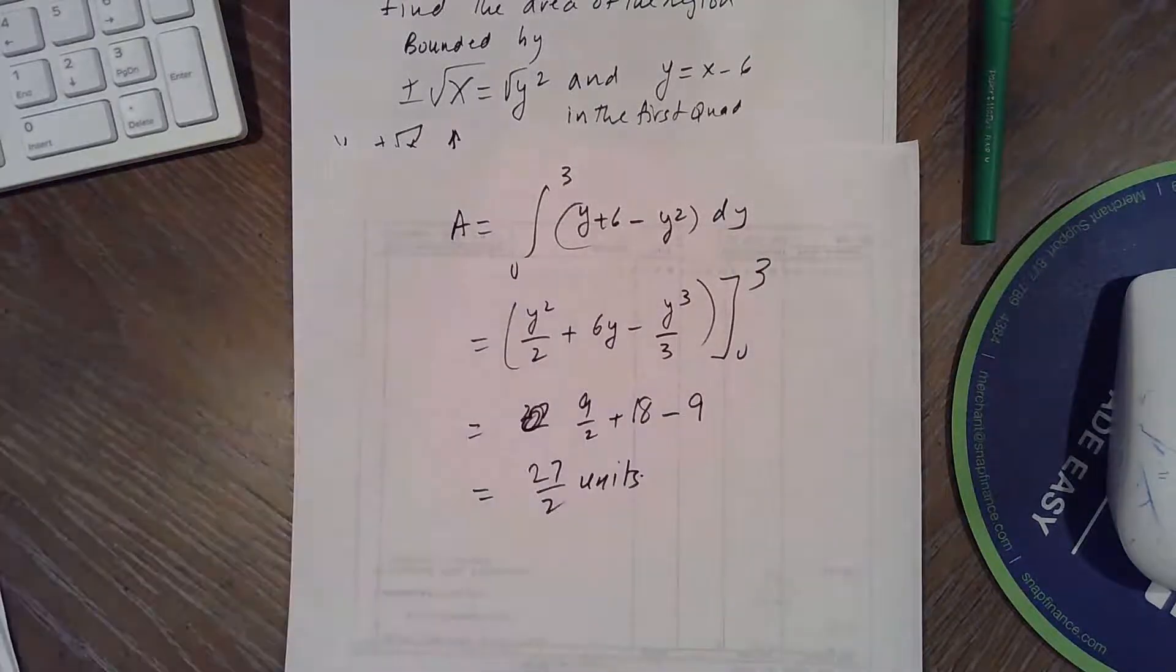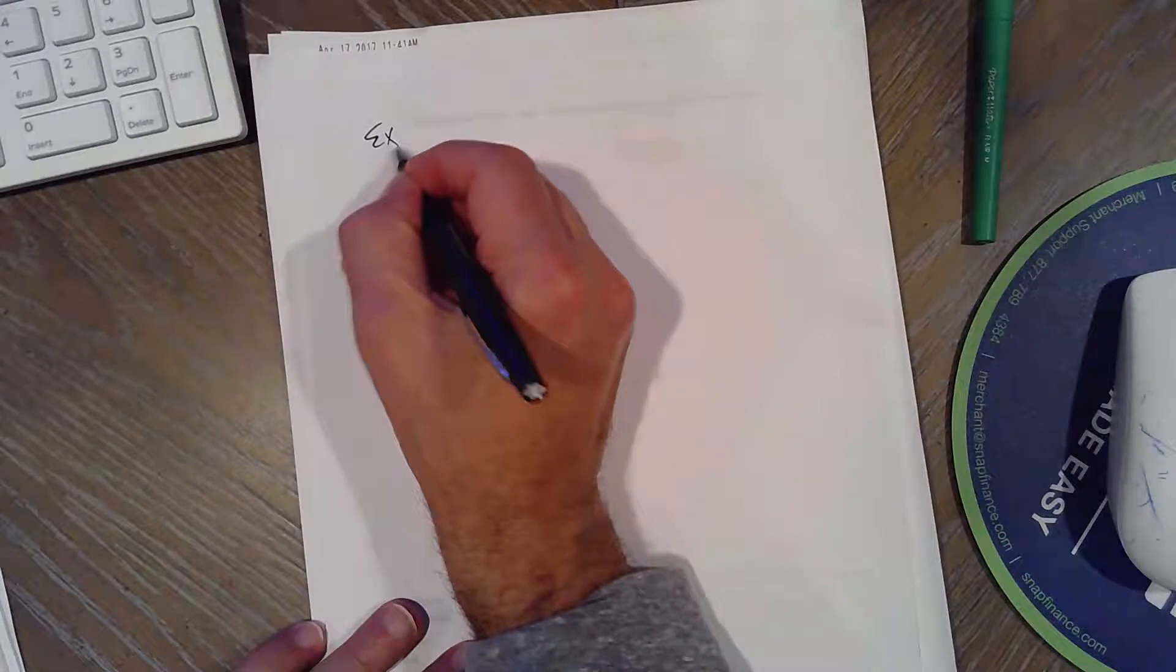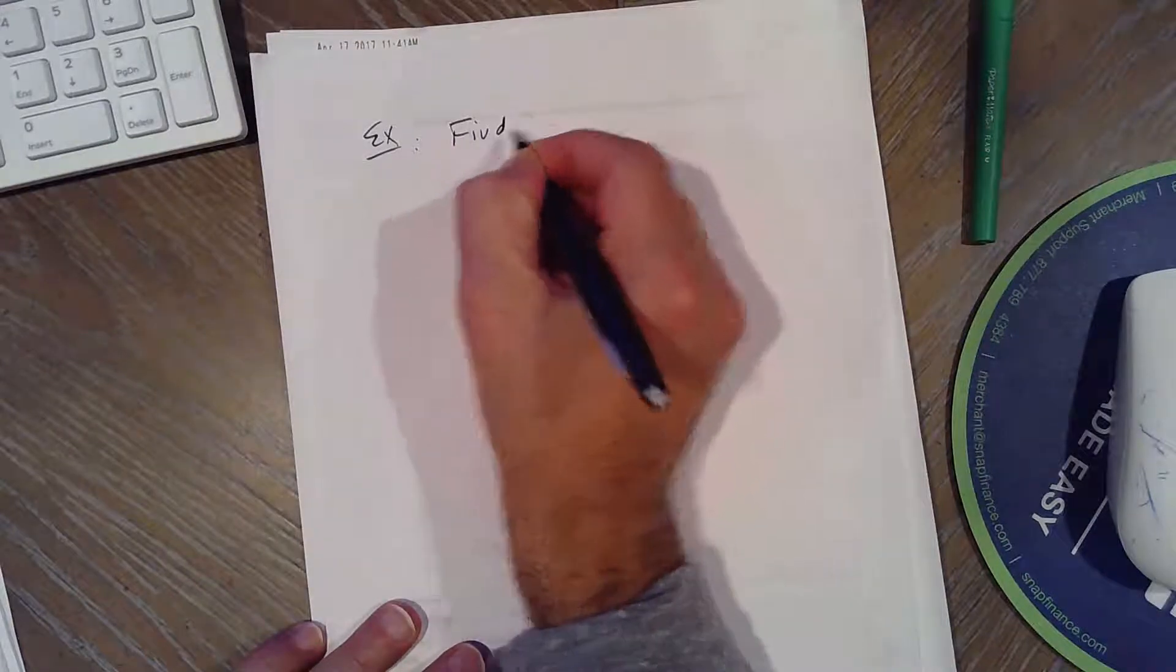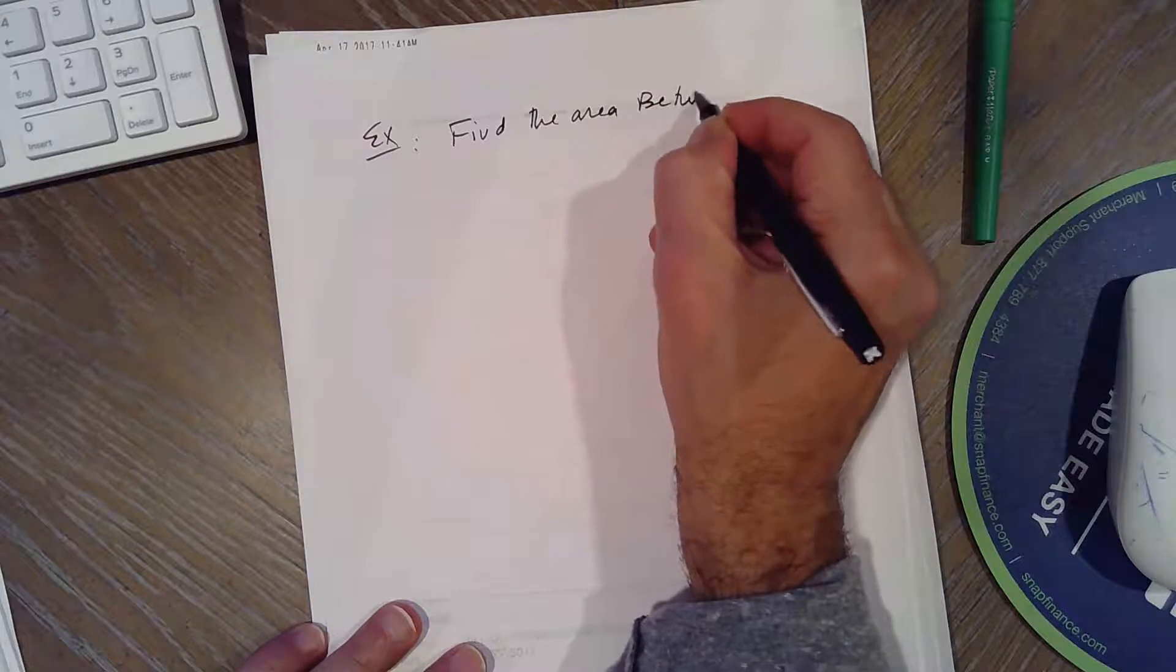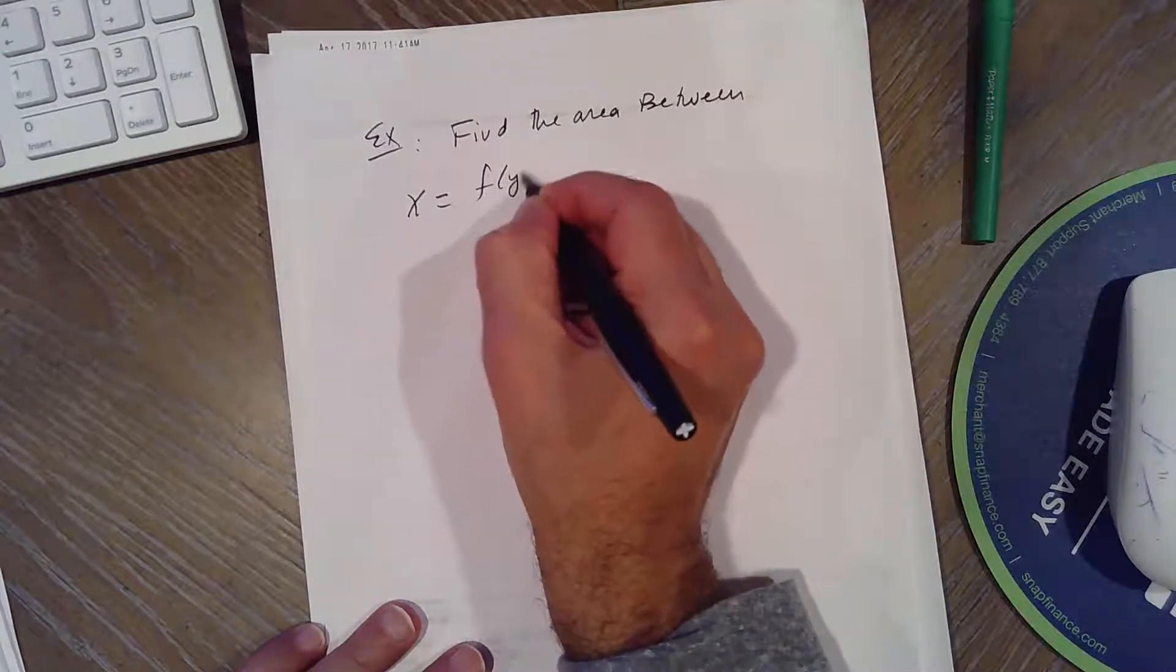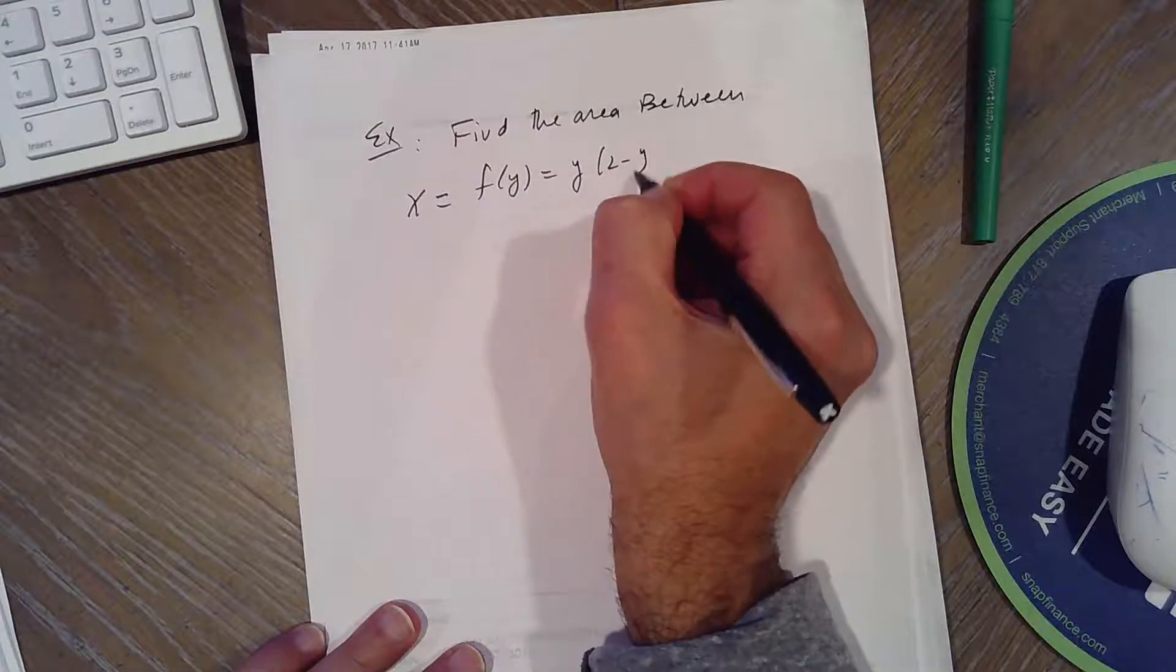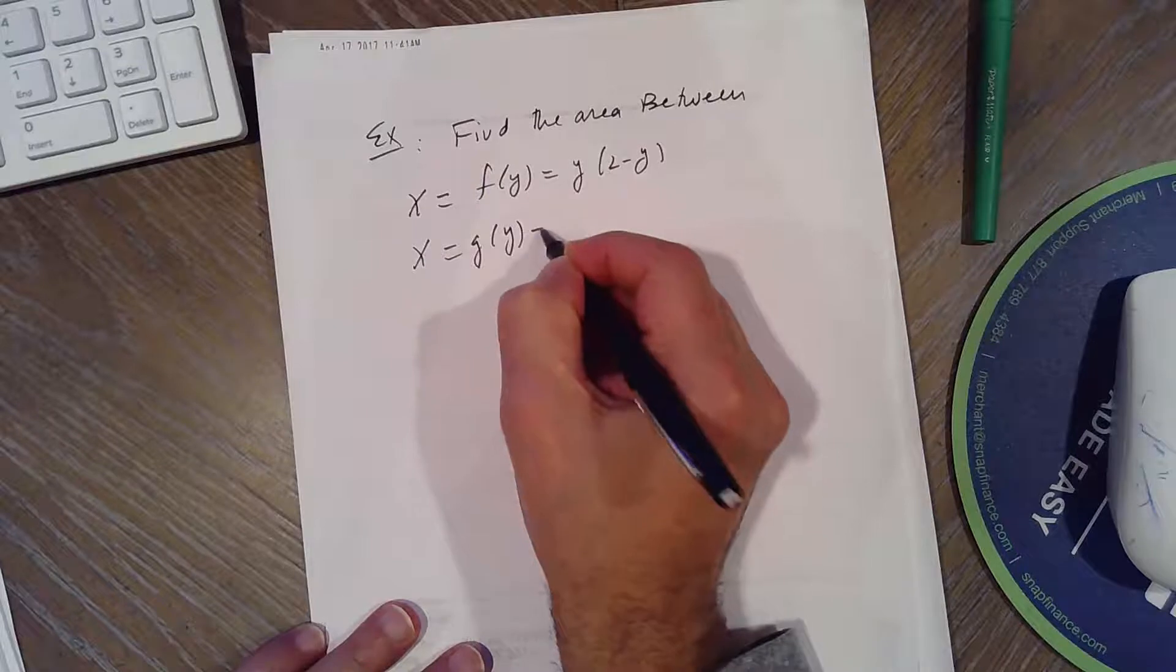So we got the same answer. All right. Here's another example. Find the area between X equals Y times 2 minus Y and X equals negative Y.